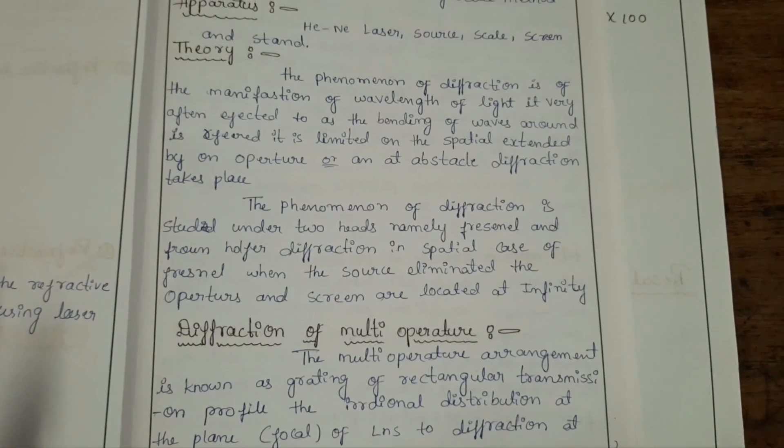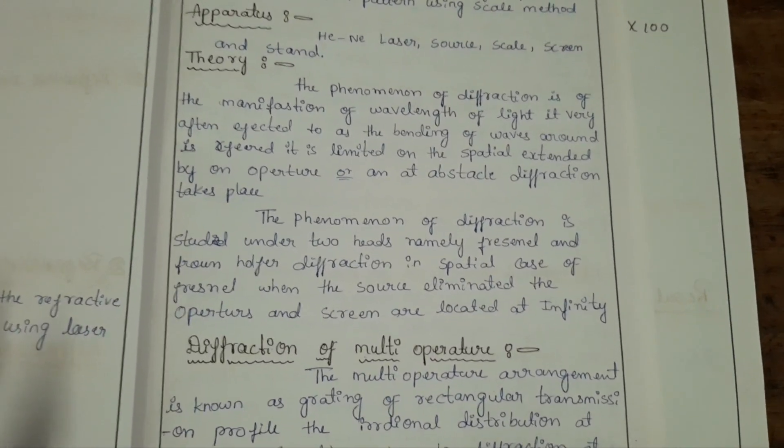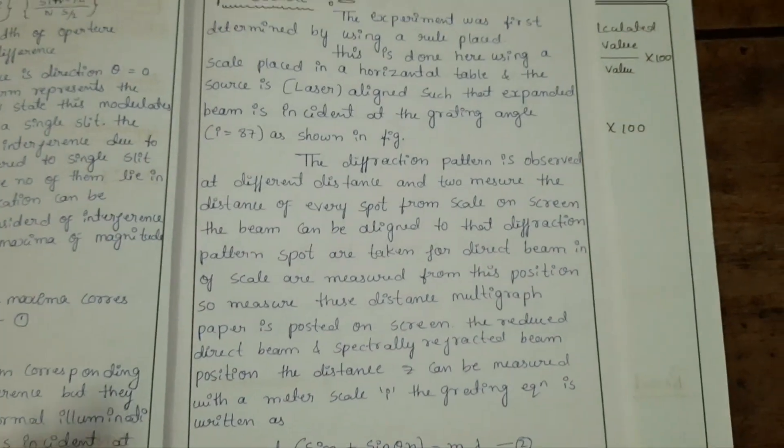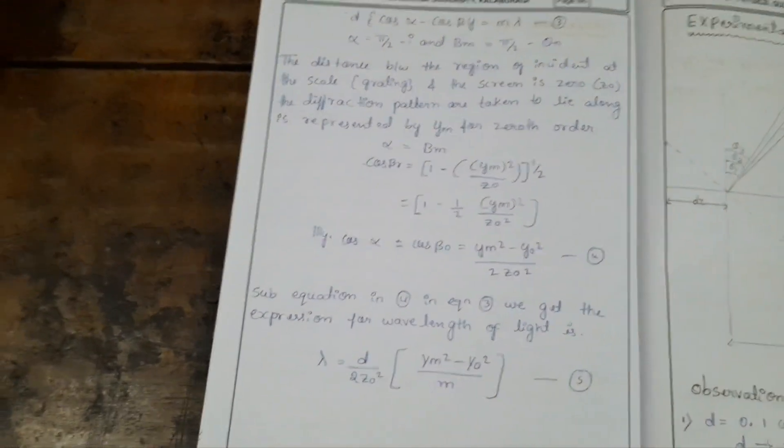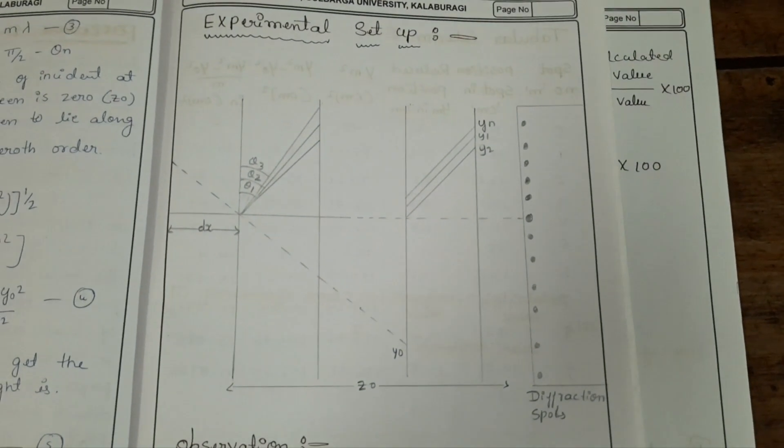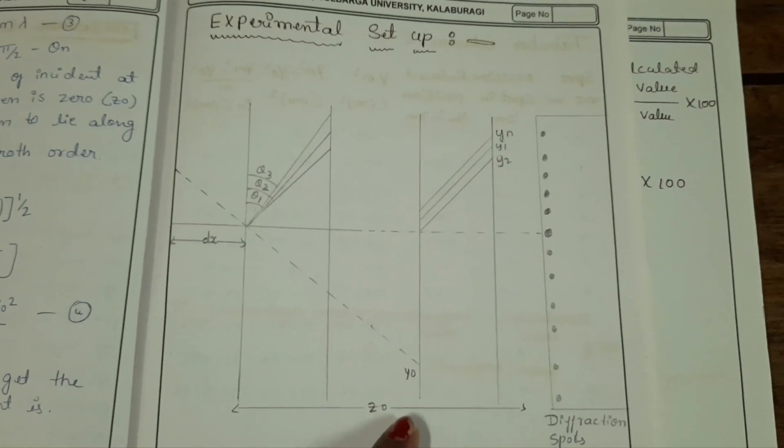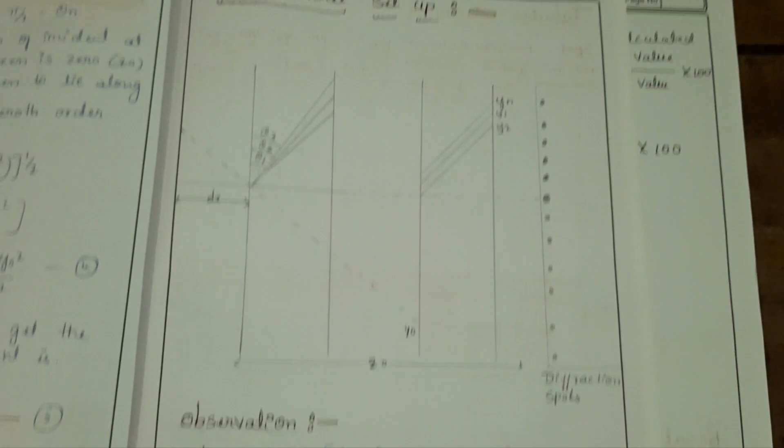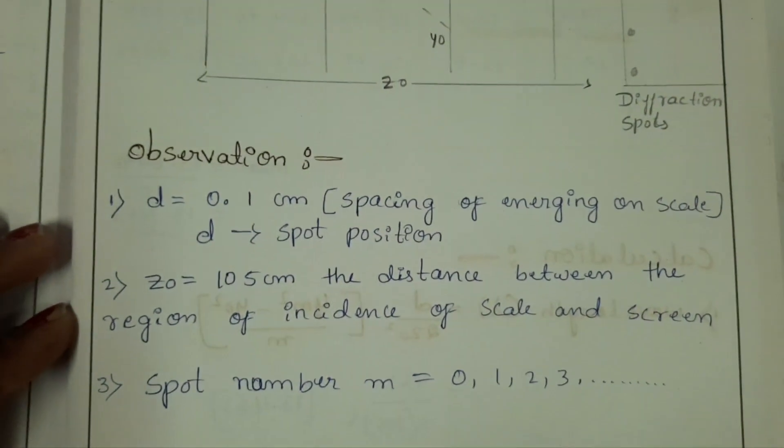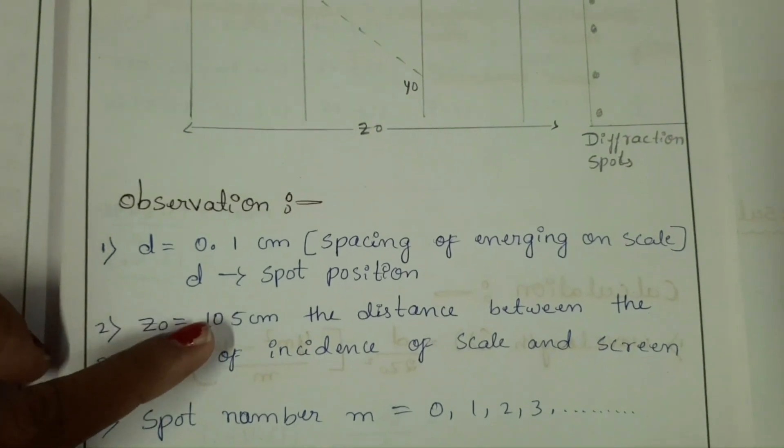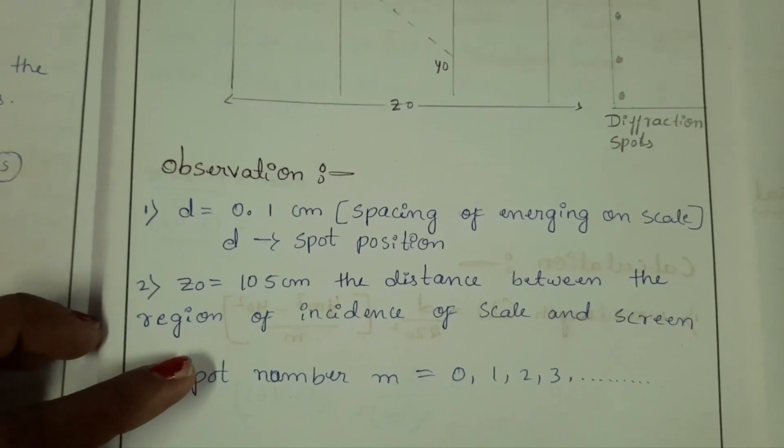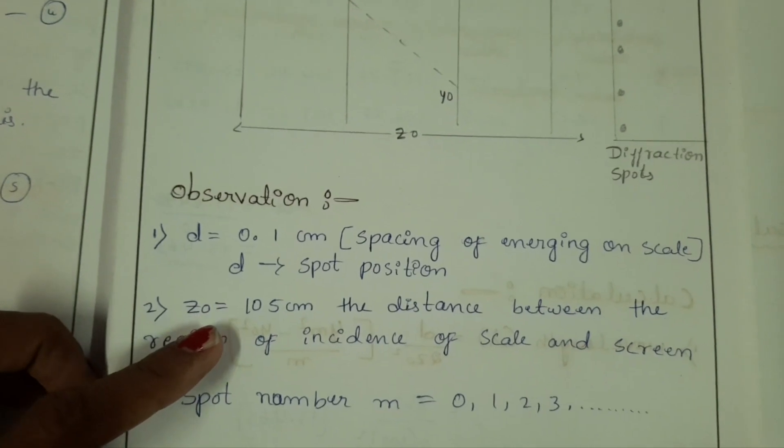The theory of diffraction phenomena involves the diffraction of multi-operator. I will explain how to do the experiment. There is a formula to calculate wavelength. This is how the actual experimental setup looks like: laser, scale must be kept on stand, and then diffraction pattern observation. Before starting the experiment, note that d is 0.1 centimeter spacing on scale. Z₀ is the distance between screen and the scale.